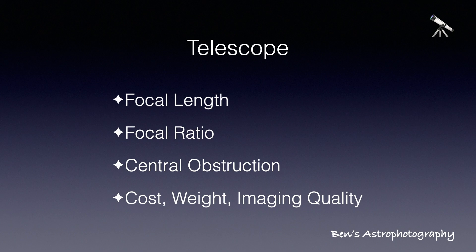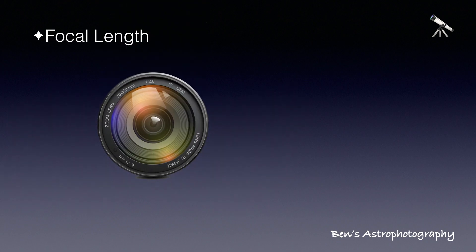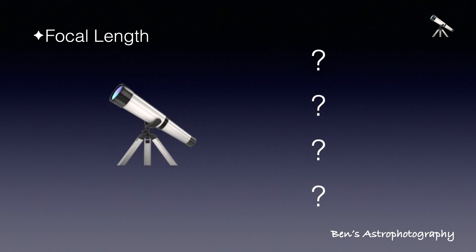Just like buying a camera lens, the first question is always: how long is the focal length? How to answer that? Find out which objects you are going to shoot — landscapes, flowers, insects, or people, etc. And that's exactly the same for choosing a telescope for astrophotography. So let's start with the targets we want to shoot.